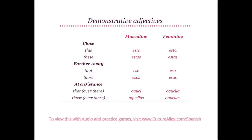Let us look at all three sets of demonstrative adjectives together. The first set describes nouns close to the speaker: este for masculine and esta for feminine; estos and estas for plurals. The next set describes nouns farther away: ese with masculine and esa with feminine; esos and esas for plurals. The last set describes nouns at a distance: aquel for masculine and aquella for feminine; aquellos and aquellas for plurals.